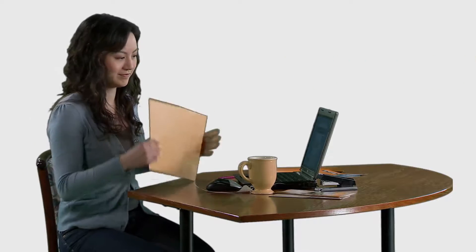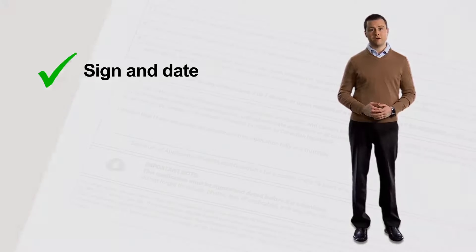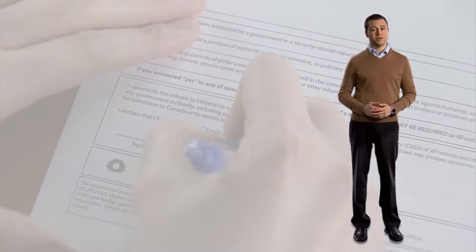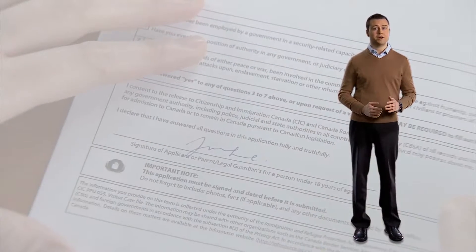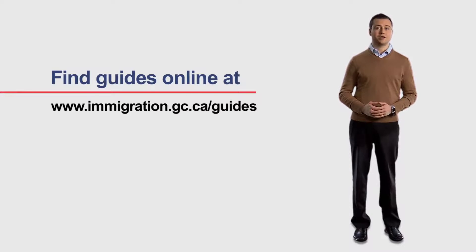Finally, remember to sign and date your application. We need your signature and the date for your application to be considered complete and valid. Depending on the form you're filling out, you may need to sign in more than one place. Be sure to read the application and guide carefully. You'll find all application guides and checklists on our website at www.immigration.gc.ca/guides. Be sure to use them.